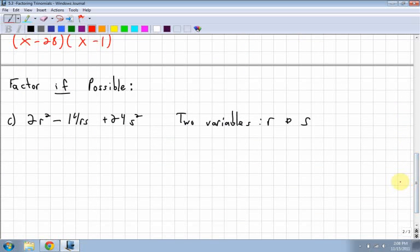Sometimes they will say, factor if possible. Factor if possible. If it is possible to factor, then all you have to do is you go through and you factor them. So the first thing I do is I look for... Uh-oh. This one has a number in front of my r squared. So the first thing I'm going to do is look for a GCF of the numbers. Of 2, 14, and 24. Well, 2 goes into 2, 2 goes into 14, and 2 goes into 24. So my GCF is 2.